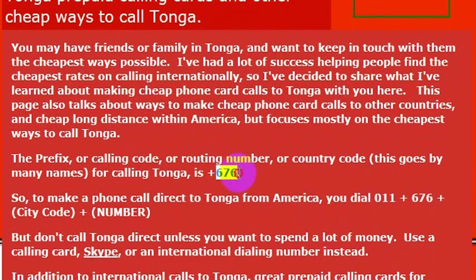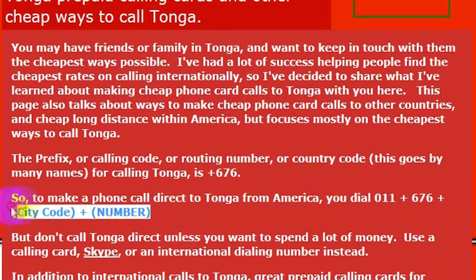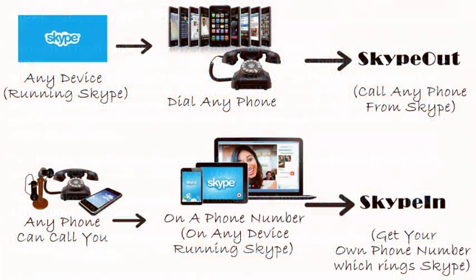So what we'll need to know in order to make those phone calls is the country code for Tonga, which is 676. So if you want to dial directly to Tonga using a landline from the United States, you would just dial 011, then 676, and then the phone number that you want to reach. So the country code for Tonga is 676.